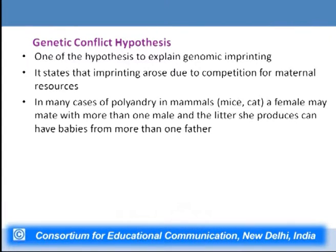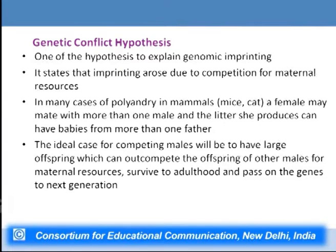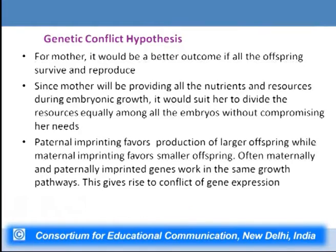One hypothesis explaining imprinting is the genetic conflict hypothesis, which suggests it occurs due to competition for maternal resources. In polyandrous mammals a female may mate with more than one male, producing offspring from different fathers. Competing males would benefit from large offspring that can out-compete others for maternal resources. For the mother, it would be better if all offspring survive and reproduce equally. The mother provides all nutrients during embryonic growth and would benefit from dividing resources equally among all progeny. Paternal imprinting favors production of larger offspring while maternal imprinting favors smaller offspring, and often maternally and paternally imprinted genes work in the same growth pathway, giving rise to conflict of gene expression.